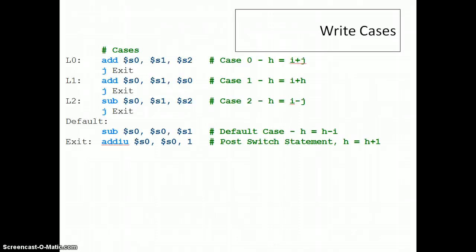First off, we write the cases. In our case, we had three cases. The zero case was H equals I plus J. The one case was H equals I plus H. And the two case was H equals I minus J. You can see we've got our little math for that in each one. In each of these cases, we also had a break statement at the end, and the break statement is replaced with a jump exit. Exit is the post switch statement, so it's whatever comes after the switch statement. In this case, it was H equals H plus one.